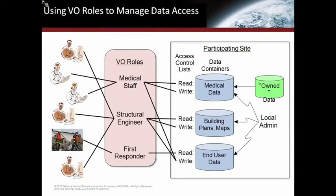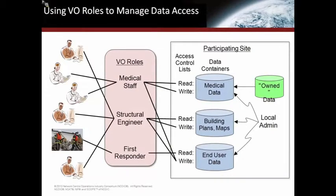The way this is used to manage data access in a disaster response scenario: on the left you have users from all different organizations and different clouds. What the VOMS does is map each one of those users and their native identity to their role identity within that VO. At a participating site, the local administrator can manage the access control lists on any of these Swift containers. For the medical staff, if they have a container of medical data, they can put those people on the read and write ACLs for that container — similarly for structural engineers, civic engineers, or first responders. A site administrator can control access to data containers according to roles within the VO, granting or revoking access at any time.